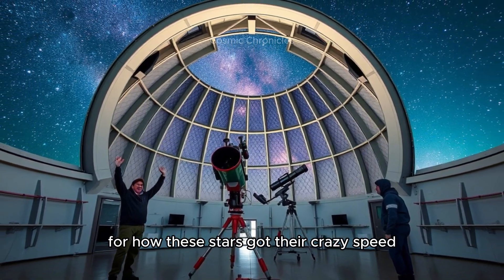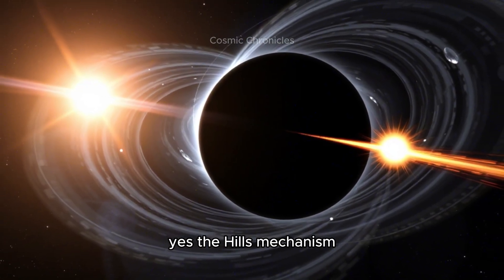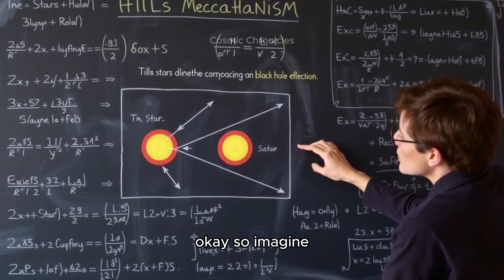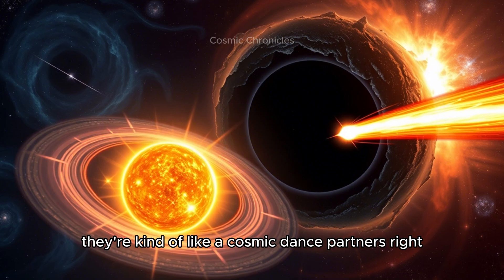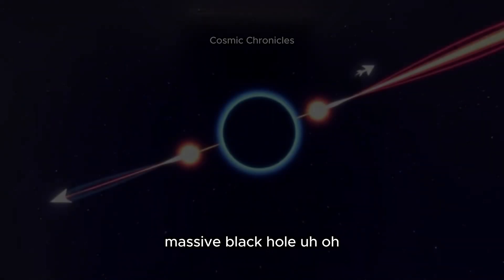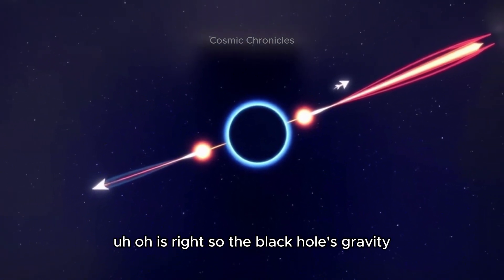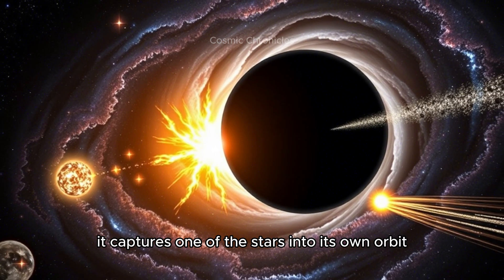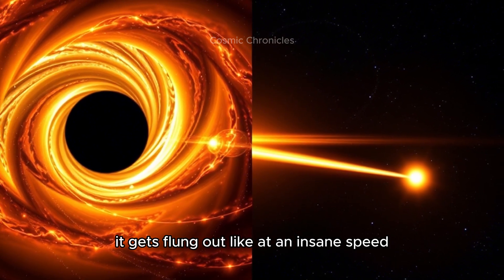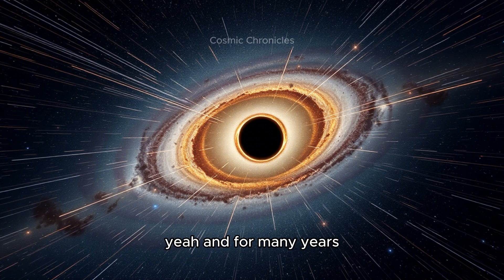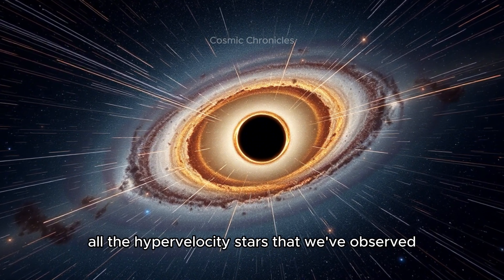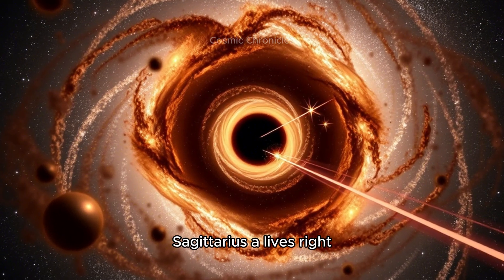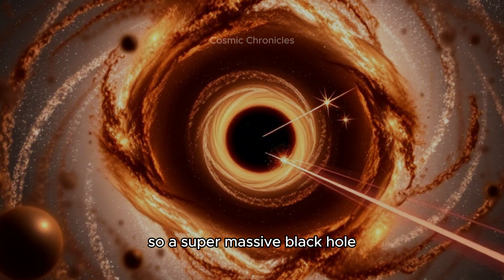We're starting to get a better picture of just how common they might actually be. And for a while, the explanation everyone went with for how these stars got their crazy speed was this thing called the Hills mechanism. Imagine a pair of stars orbiting each other, like cosmic dance partners, and they get a little too close to a supermassive black hole. The black hole's gravity is so intense that it can disrupt this pair, this stellar partnership. What happens is it captures one of the stars into its own orbit, while the other one gets flung out at an insane speed - like a cosmic slingshot.